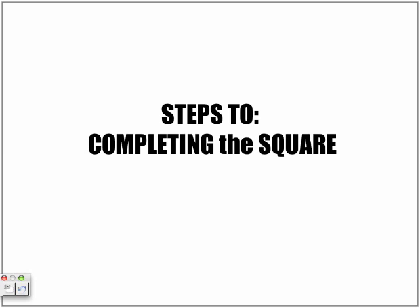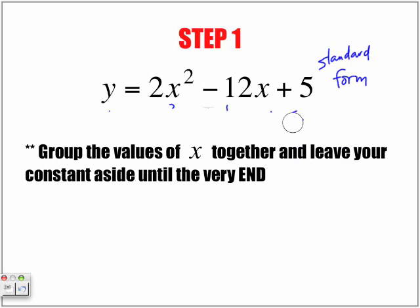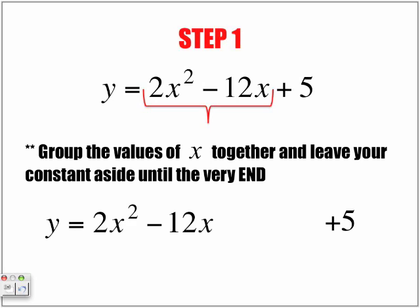Steps to completing the square. Step one. Here's our equation in what we call standard form. Standard form is anything that's in the form of y equals ax squared plus bx plus some kind of c constant. So first step, group the values of x together and leave the constant aside until the very end. So what we're going to do is we are going to pretty much group our x's and put that plus 5 off to the side and not worry about it until the very end. So now let's take this last part here.